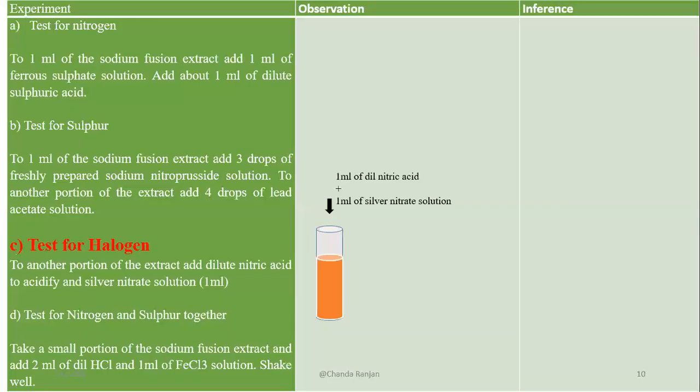Now we test for halogens — chlorine, bromine, iodine. We take dilute nitric acid and 1 ml of silver nitrate and add to the sample, then shake it. No white or yellow precipitate forms, showing the absence of halogens. So nitrogen is absent, sulfur is absent, and halogens are also absent.